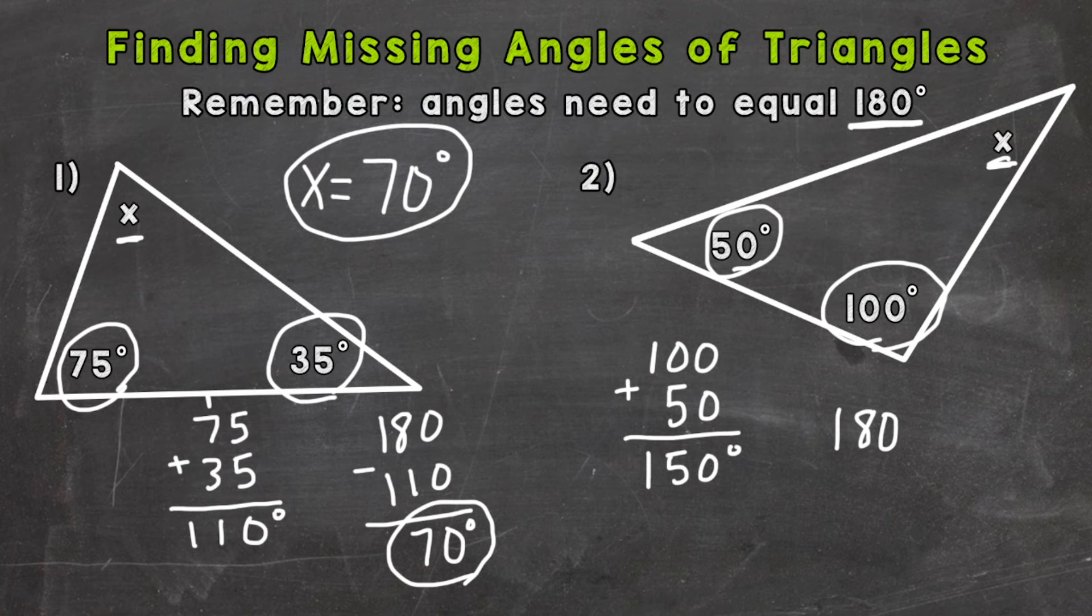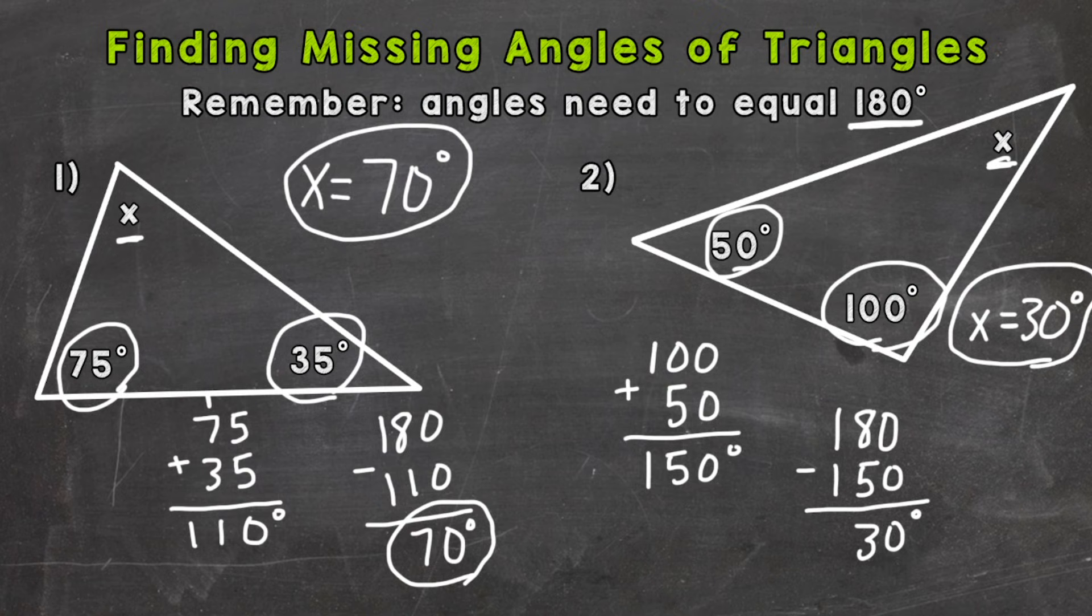So 180 minus the 150 gives us 30 degrees. X for number 2 equals 30 degrees. And if we add all three of those angles up, 30 plus 50 is 80, plus that 100 is 180 degrees. So we hit our magic number.